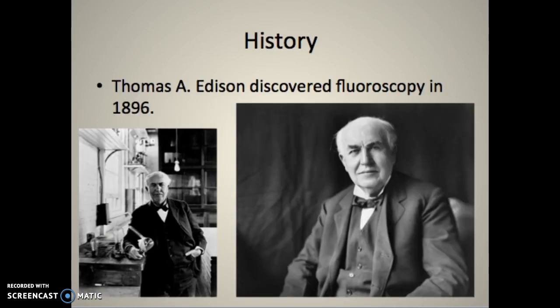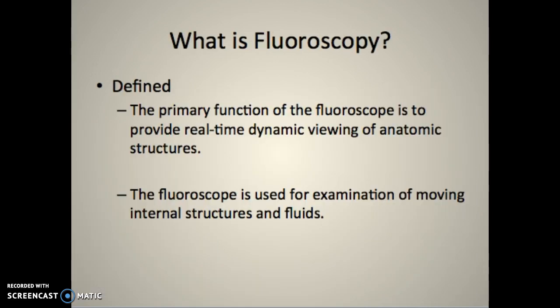Thomas Edison, as we talked about in your 105 class, discovered fluoroscopy in 1896 - a year after Roentgen discovered x-rays. The primary function of the fluoroscope is to provide real-time dynamic viewing of anatomic structures, showing the body in dynamic movement. We give barium to patients to watch it flow through the digestive tract, and inject iodine into the vascular system to see arteries, veins, and tumors.